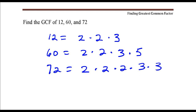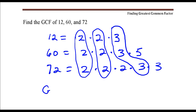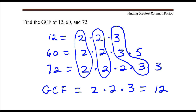The greatest common factor of these three numbers is just going to be the product of their common factors. Two is common, there's another two that's common, and a three is common. So the greatest common factor is going to be the product of their common factors. In this case, the greatest common factor is 12.